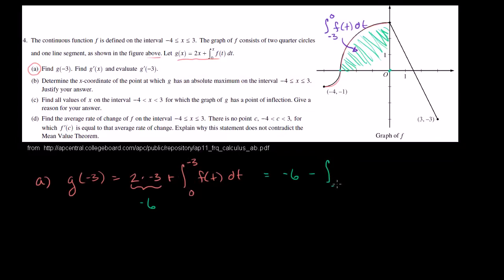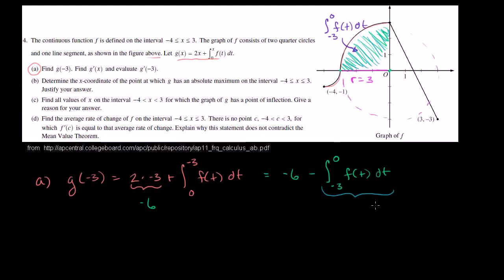So we get minus the integral from negative 3 to 0 of f(t) dt. This expression is the area under this quarter circle. We can use a little geometry to figure that out — the radius here is 3. The area of the entire circle would be πr², so π times 3 squared equals 9π. But this is only one fourth of the entire circle, so we divide by 4, giving 9π/4. So part a gives us negative 6 minus 9π/4.